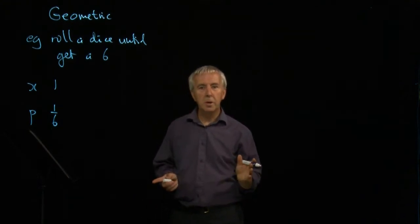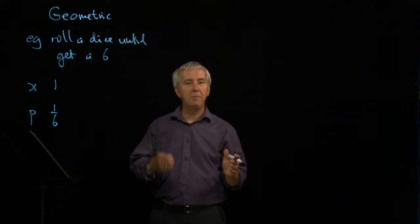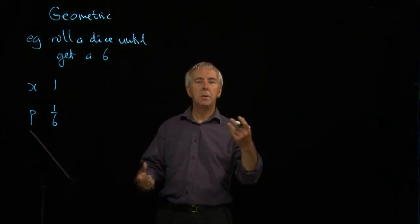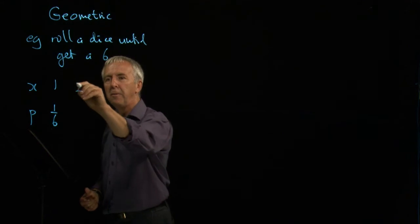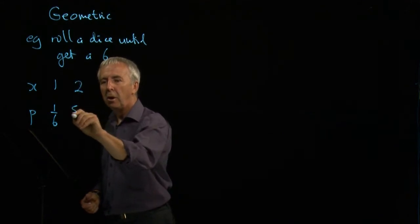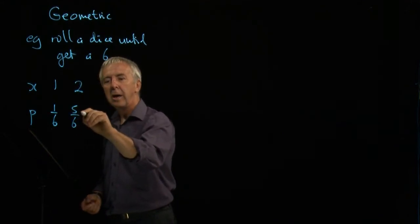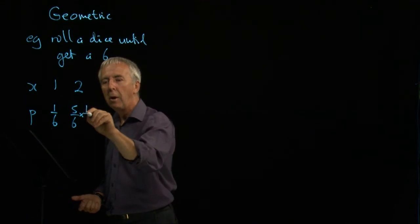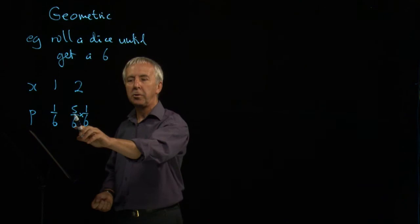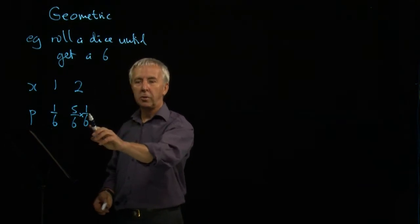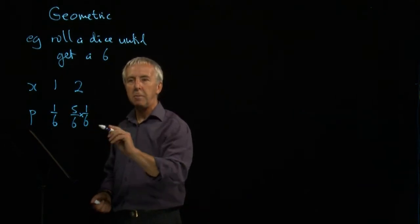You might need two goes to get the six, and that would happen if you failed on the first go and then got your six on the second go. In order to fail on the first go, the chance of that happening is five-sixths. So we have five-sixths of a chance that you fail on the first attempt and then one-sixth of a chance that you're successful on the second attempt.